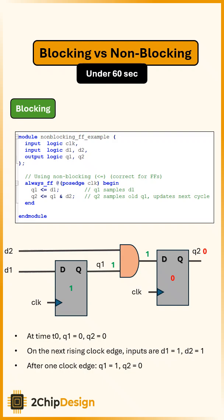And that's the key difference. Blocking assignments update in sequence one after another, while non-blocking assignments update in parallel at the end of the cycle.